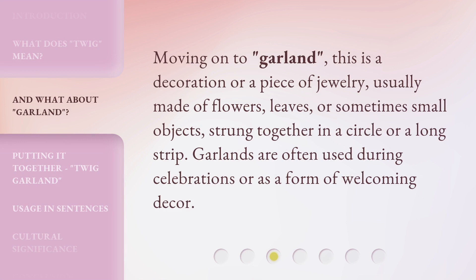Moving on to 'garland' — this is a decoration or a piece of jewelry, usually made of flowers, leaves, or sometimes small objects, strung together in a circle or a long strip. Garlands are often used during celebrations or as a form of welcoming decor.